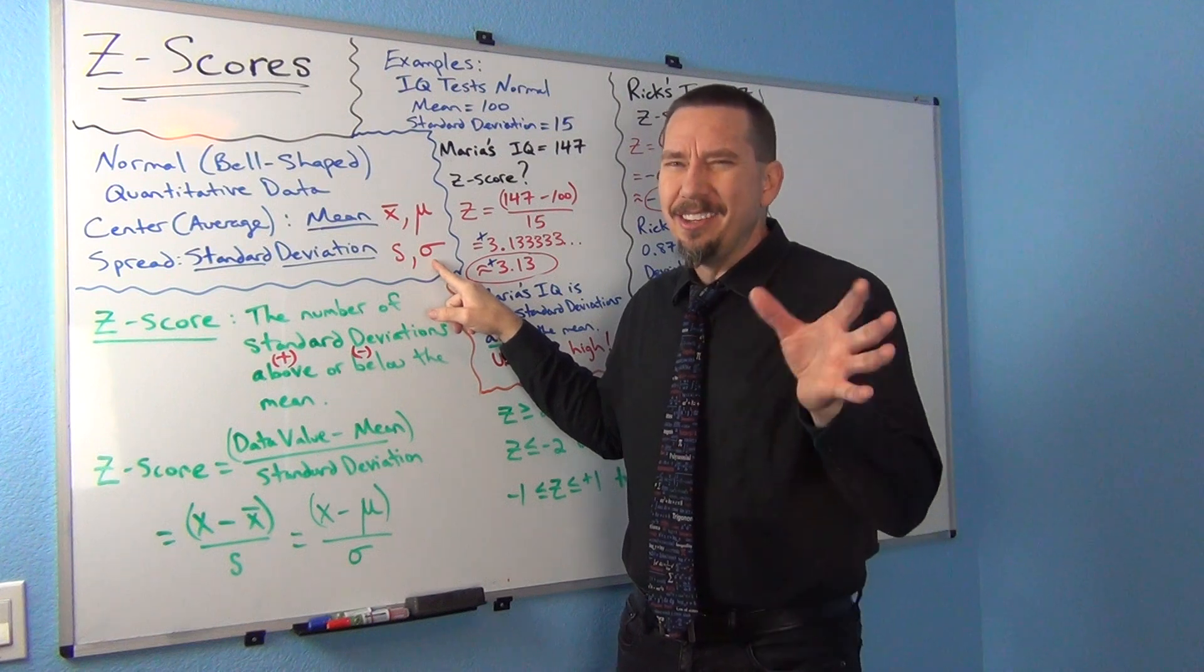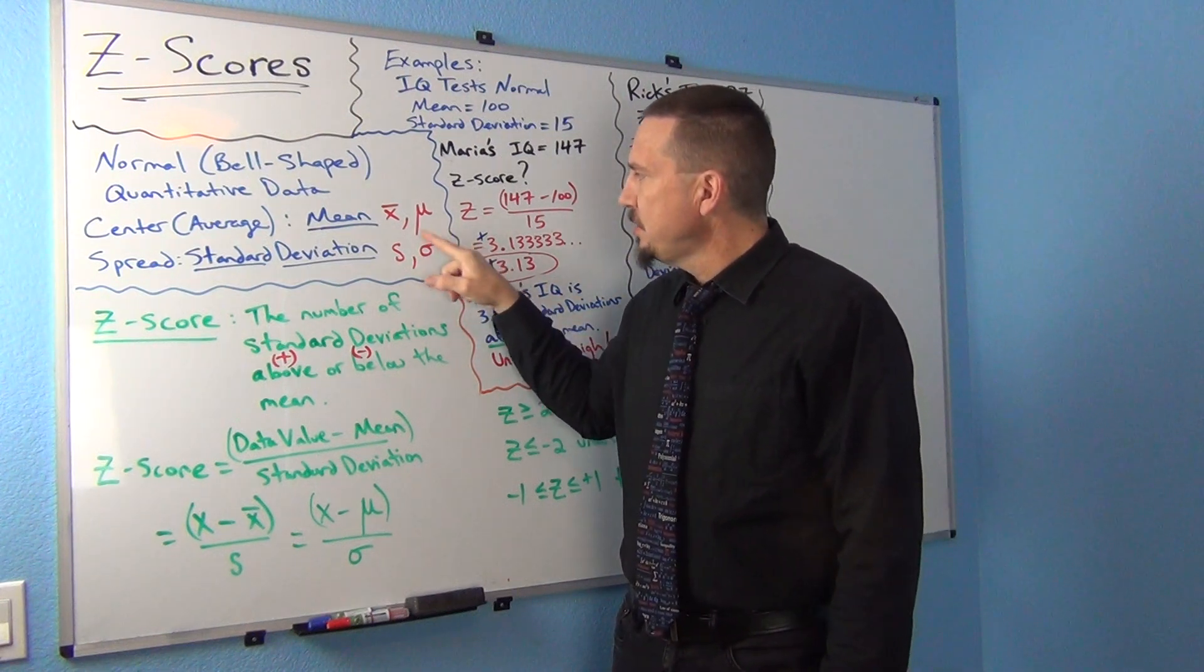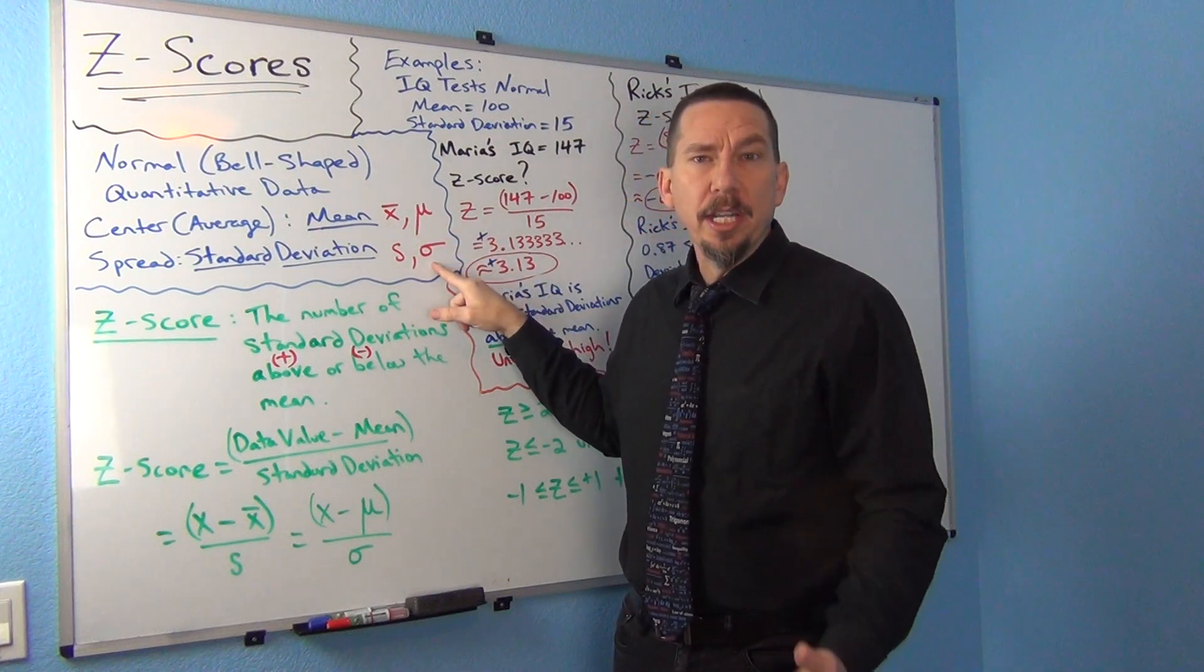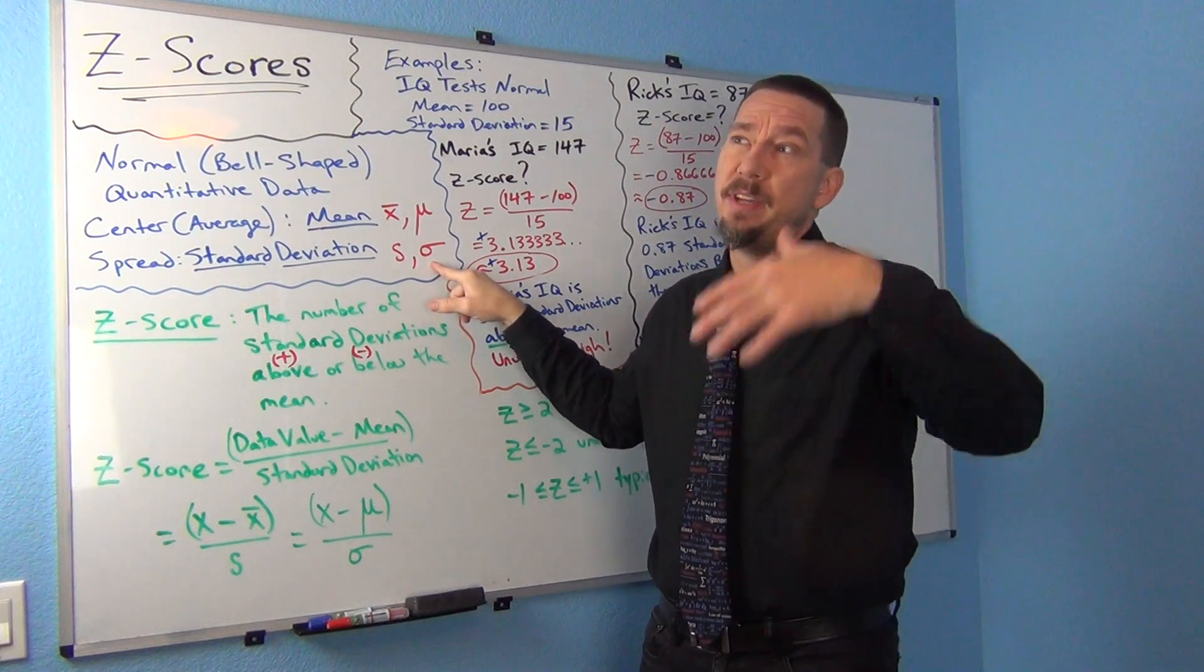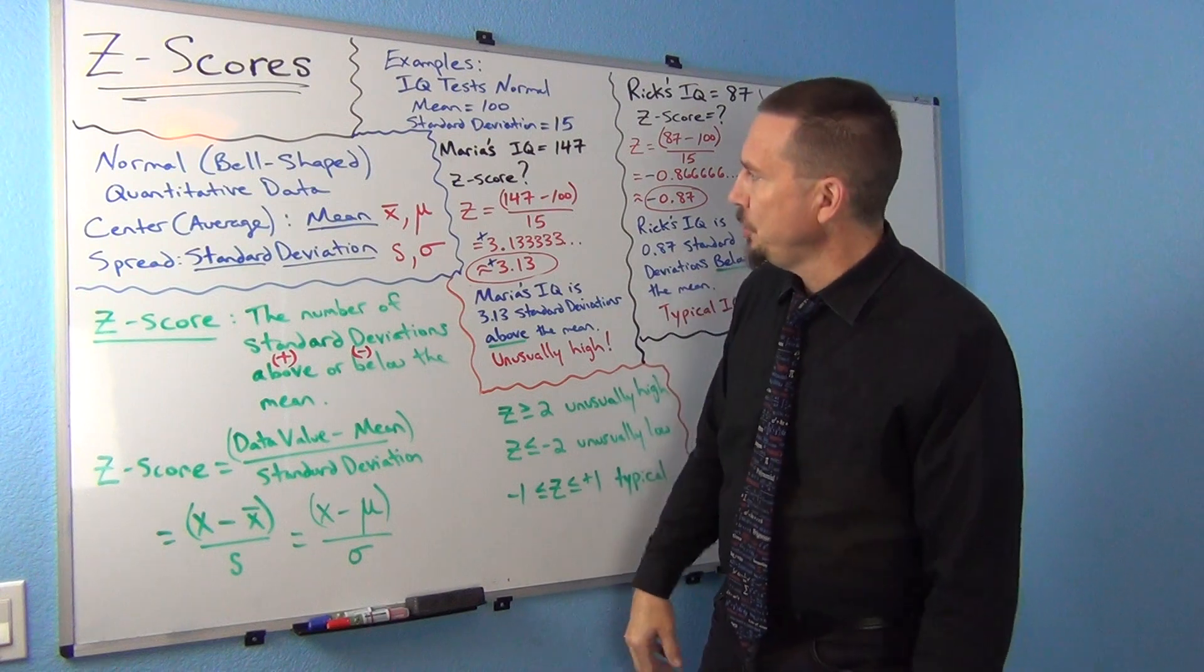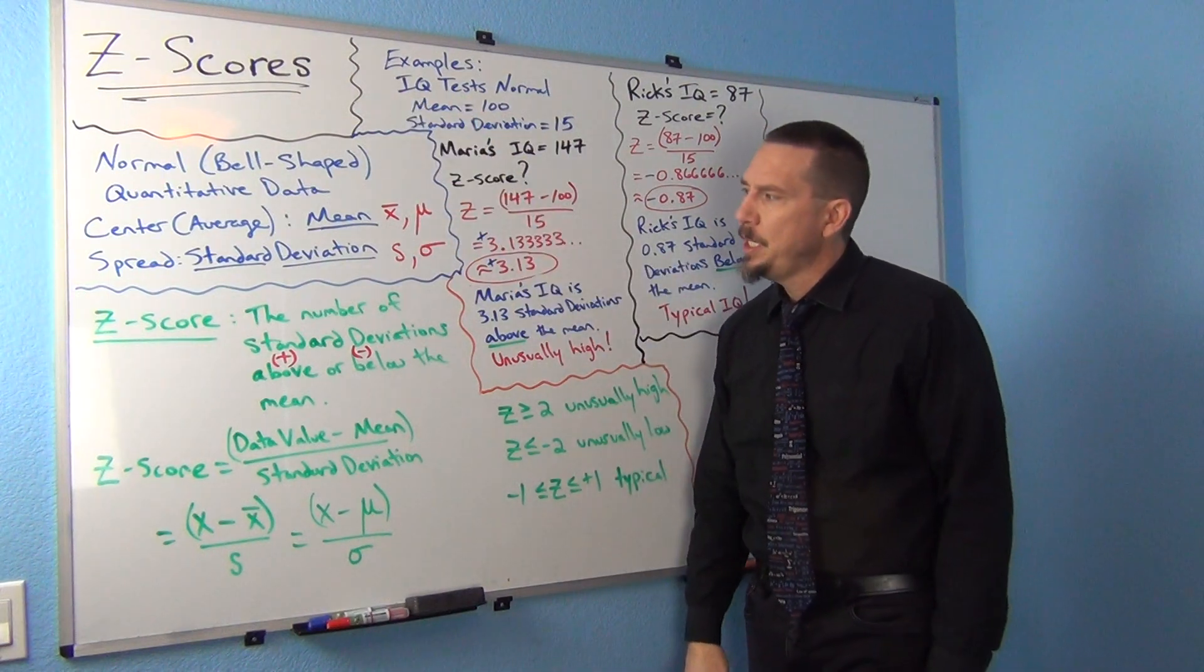This symbol here is another Greek letter called Sigma. We'll get more into these letters in the next unit, so don't worry too much about it right now. But this Greek letter Sigma is usually denoted as a population standard deviation. If you're talking about standard deviation of the entire population, then that would be Sigma. So you'll see these letters sometimes in Z-score formulas in stat books.